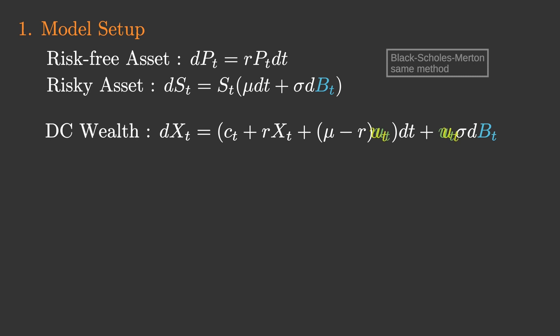The amount of risky assets held U is called the controller. This is usually determined by the DC plan participant. In this video, we assume that this is determined based on time t and the reserve amount x at that time, and we want to find the optimal one.